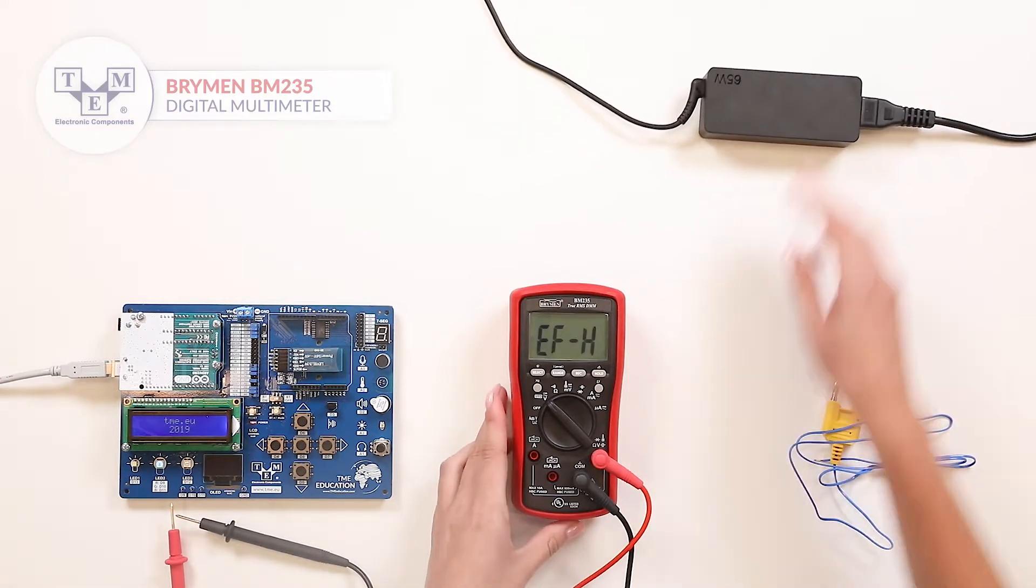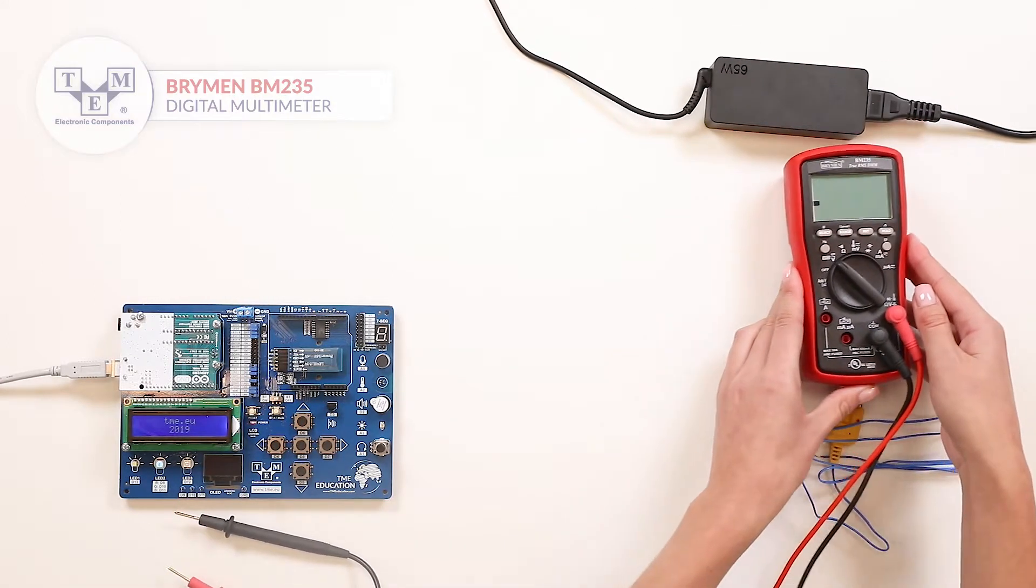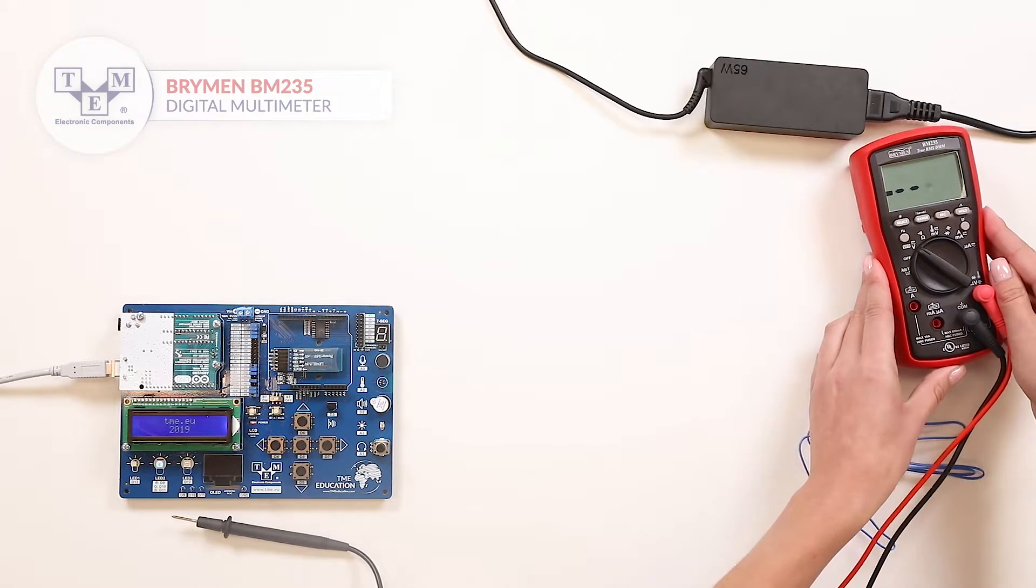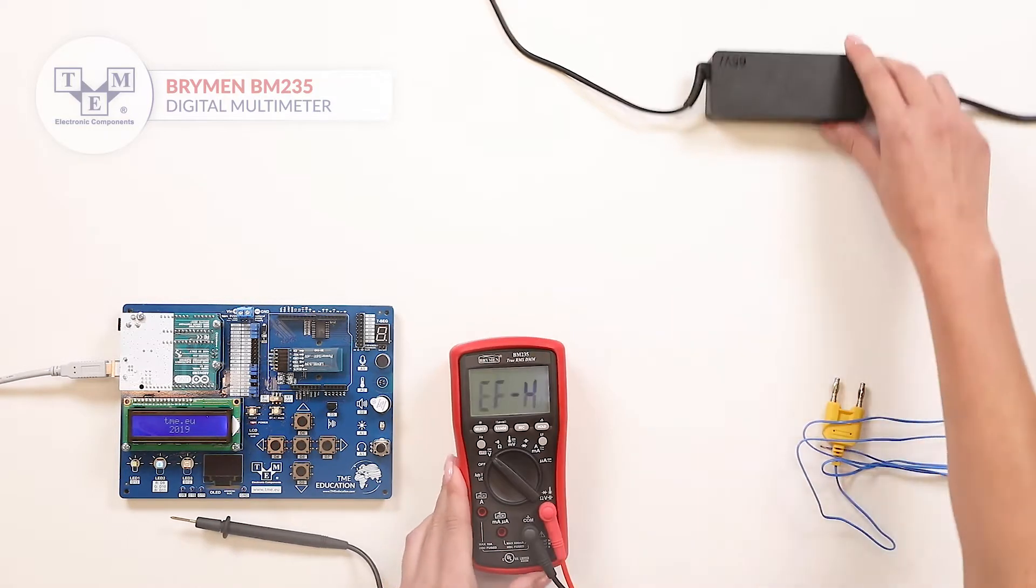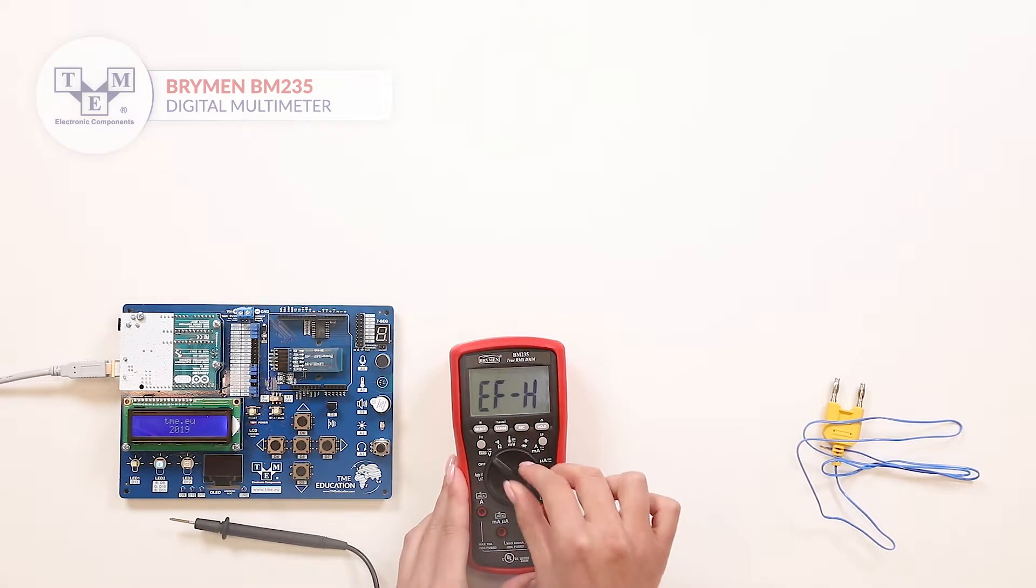The meter is equipped with non-contact electric field detection, which is ideal for tracing live wiring connections, locating wiring breakages and to distinguish between live and earth connections.